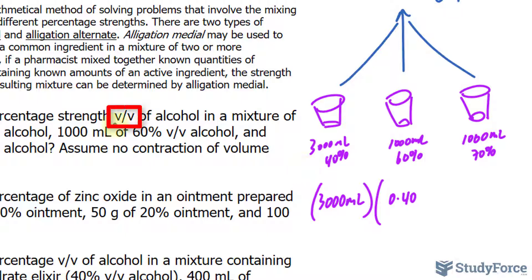It's a volume per volume, which means that 0.4 milliliters of alcohol is found per one milliliter of the solution. So by multiplying 3000 and 0.4 together, you actually get the amount of active ingredient, which is the alcohol in this container.